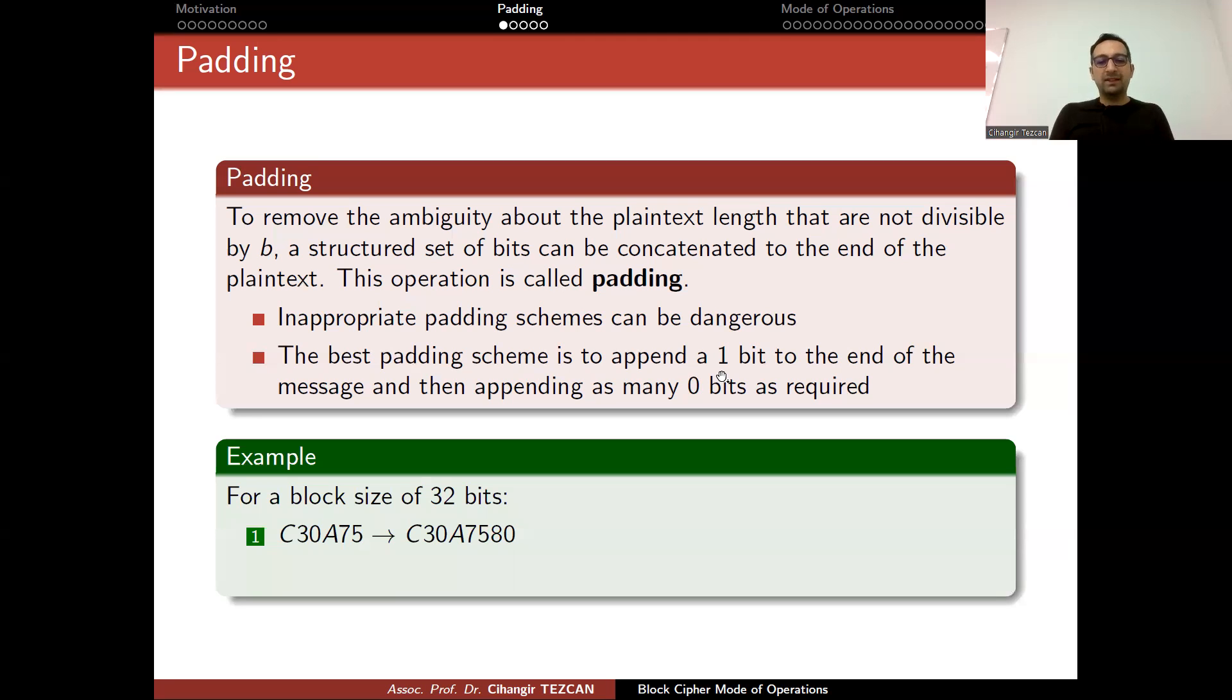Here is an example for a block size of 32 bits. For instance, this is the hexadecimal value you want to encrypt. It is three bytes, so the last byte is missing. After padding, you just add a single 1 and seven 0s to fill the single byte. In hexadecimal, this corresponds to 80. The person who decrypts this block and obtains this value will remove every zero at the end until they see a single 1 and also remove it, so they obtain the plaintext. We remove the ambiguity by appending a single 1 bit before the zeros.